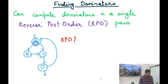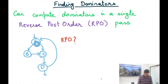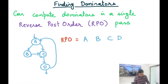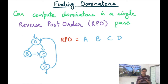Notice that from A I have a choice — I could first visit D or first visit C. You'll find that irrespective of which branch you take in your post order traversal, you get the same post order: D, C, B, A. And so the reverse post order will always be A, B, C, D. Now it is not necessary that reverse post order is unique — there could be multiple reverse post orders for the same control flow graph. In this example it happened that irrespective of which branch you take, you get the same reverse post order A, B, C, D.